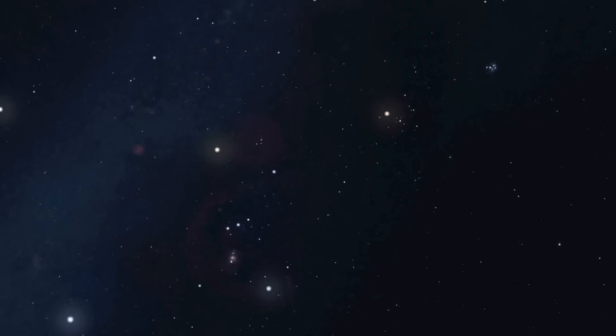Now, the belt is surrounded by four stars that make up a rectangle. Those are the shoulders and feet of Orion. Orion also has a sword on his belt hanging down.